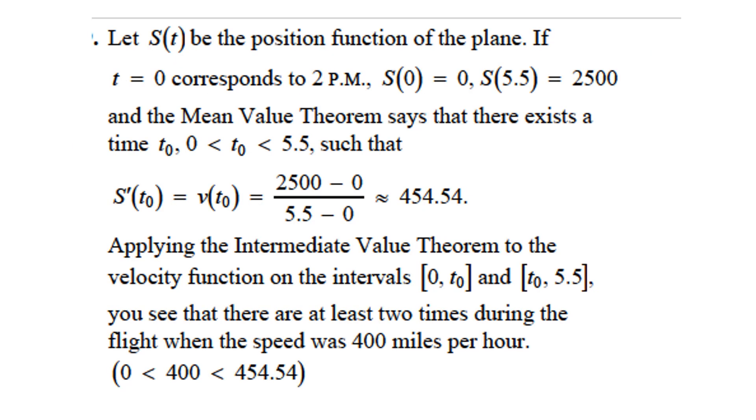Okay so basically this is a mean value theorem. What you can say is that at zero you're at a point zero at five and a half hours. You're somewhere that we're calling 2,500 away from there. So that means there is t zero between those two such that the derivative, which is the velocity, is equal to the average rate of change. So that means the average rate of change was more than 400 miles an hour. Now so we reached more than 400 miles an hour.